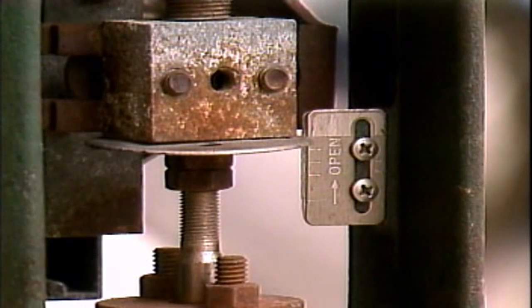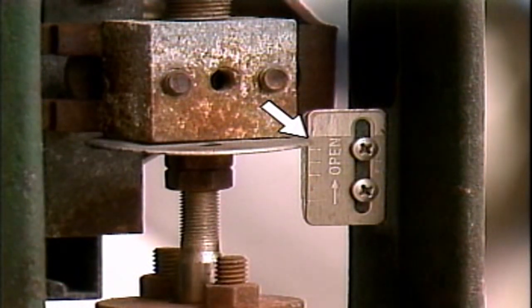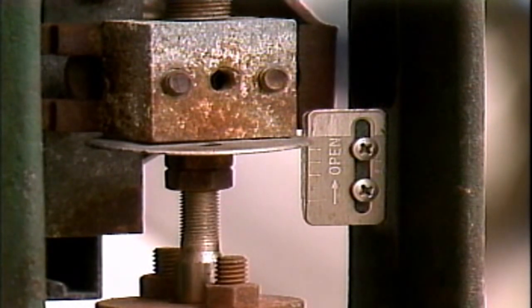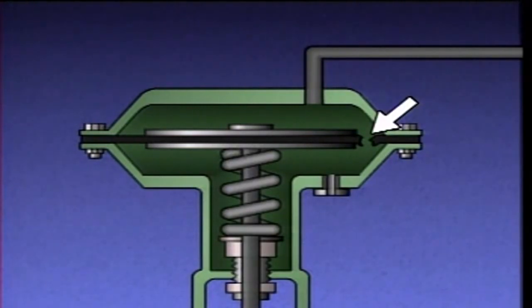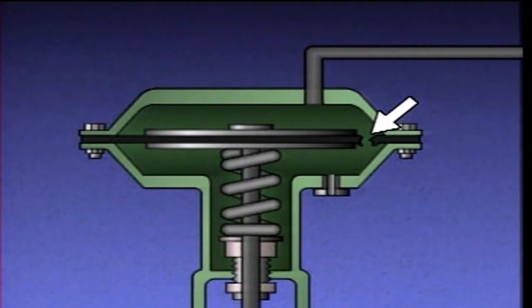However, if the position indicator shows that the valve is open when it should be closed, the problem could be in some other part of the control valve or in the actuator. For example, a diaphragm actuator will not be able to properly position its control valve if its diaphragm ruptures or if air pressure to the actuator is lost.